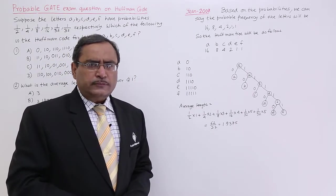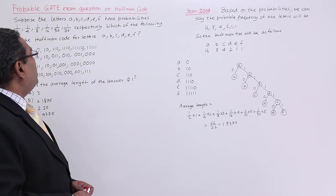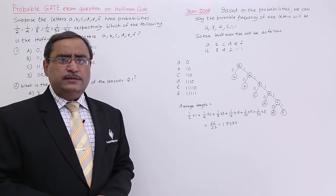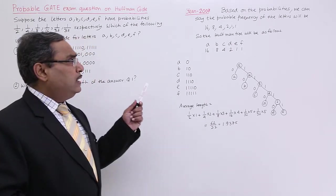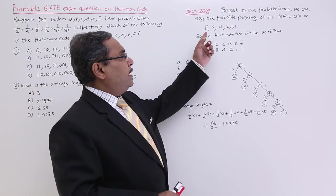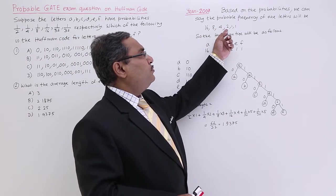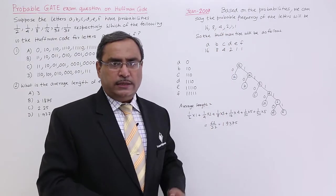Now, you see I think to handle with this 1 by 2, 1 by 4, 1 by 8 is difficult. That is why I have multiplied each one of them with 32, so it is coming at 16, 8, 4, 2, 1, 1. In this way the things are coming.